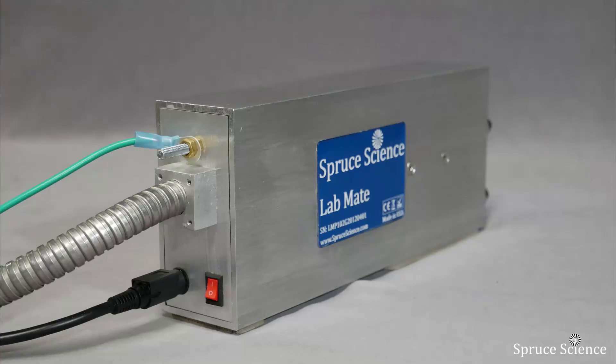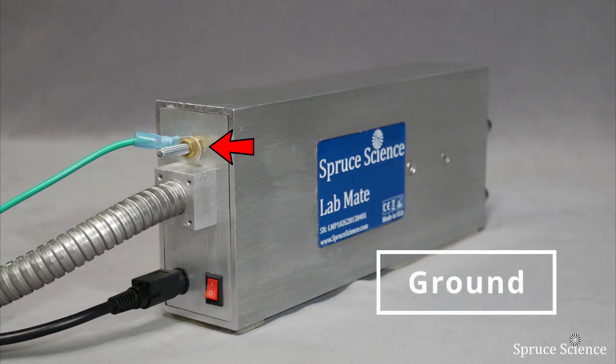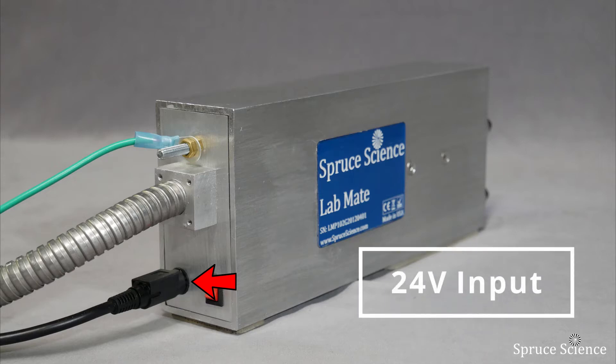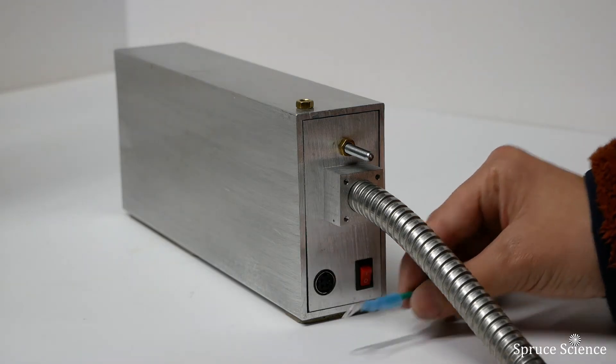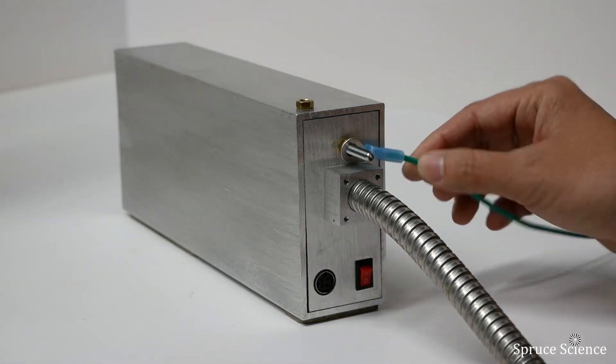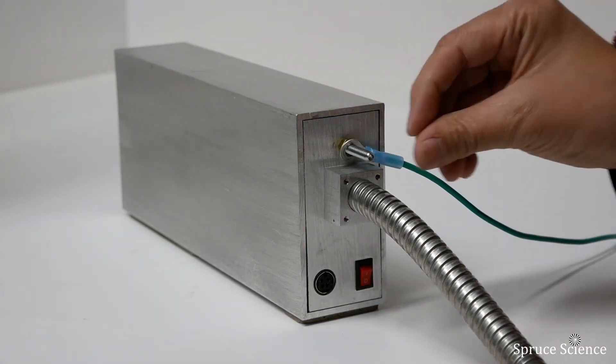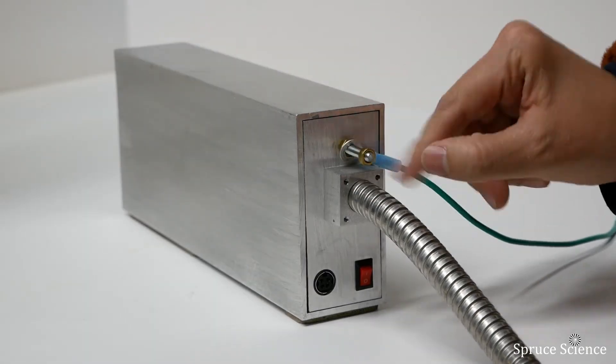On the back of the generator you will find M5 threaded stud for grounding, main power on-off switch, DC input connector, and high voltage output connector. Now that we have gone over the basics of the high voltage power supply, let's complete the setup by going over the high voltage connection.